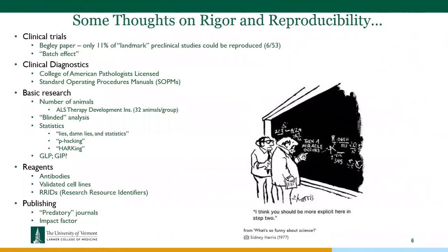They also found that in many instances investigators were not blinded to the experimental groups. Statistics has become quite an issue with respect to p-hacking and HARKing. P-hacking is basically running the data every which way until you reach 0.05, and that's what you present. HARKing is Hypothesizing After the Results are Known — you look at your data, find something significant, and go back and change the hypothesis. Both are quite significant issues today.